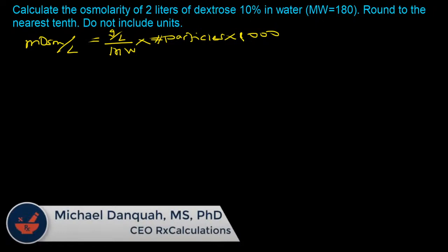There's a three-part process. The first step is to determine the molecular weight — we've already been given 180, so we don't need to calculate anything there. The second piece is the number of particles. For dextrose, because it is a non-electrolyte, when you put it in an aqueous environment it will not dissociate. So the number of particles is one.